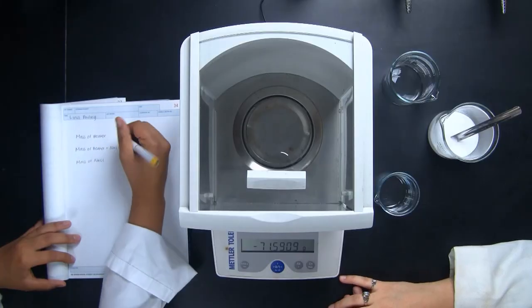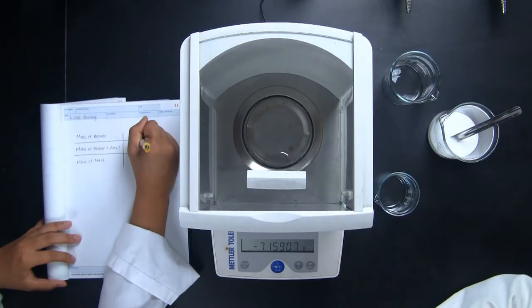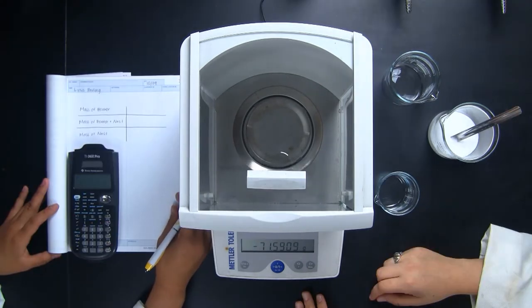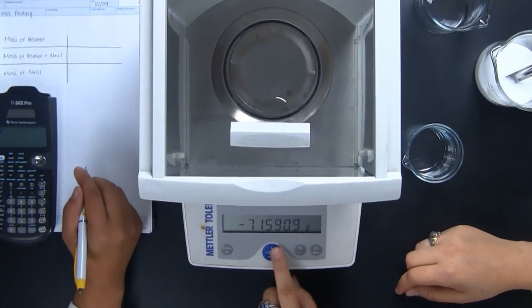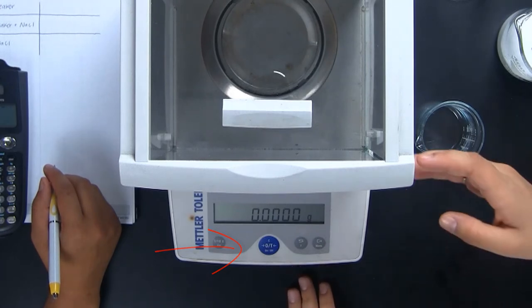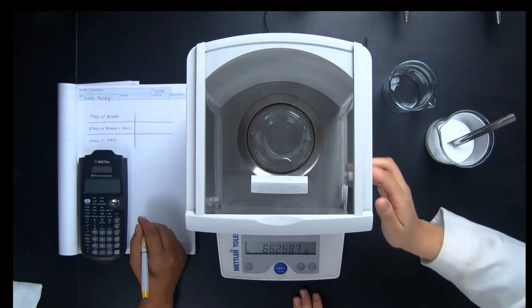Wendy is a conscientious student. Notice that she is preparing a table to record her data ahead of time. She has read the lab manual and is ready to go. Before we start, Ileana is going to zero the balance. Remember, we never put any reagents directly onto the balance pan. Ileana will measure the reagent into the beaker.